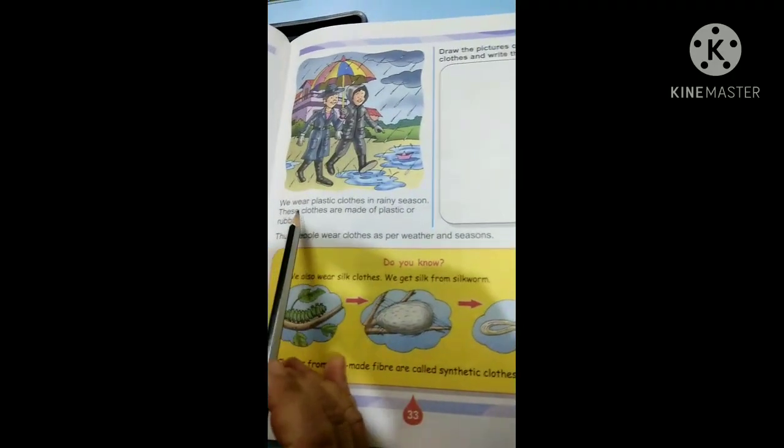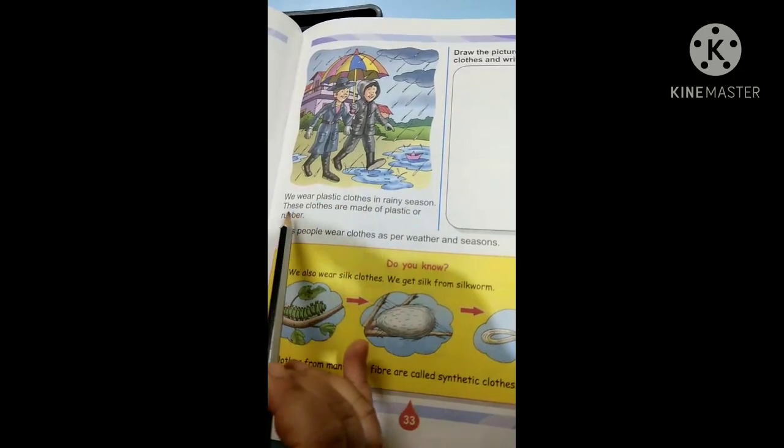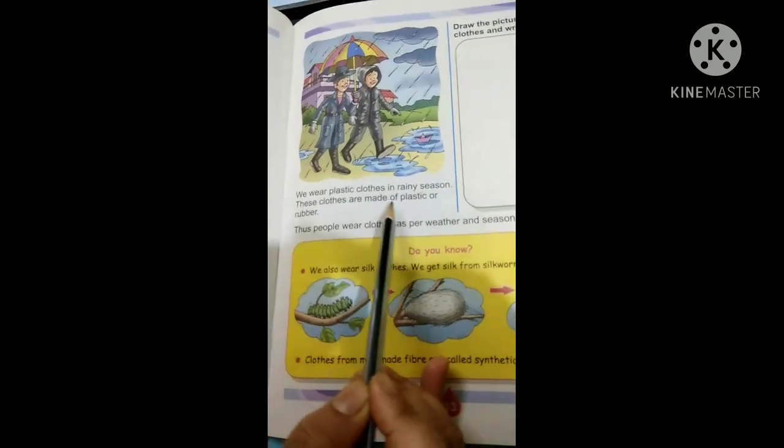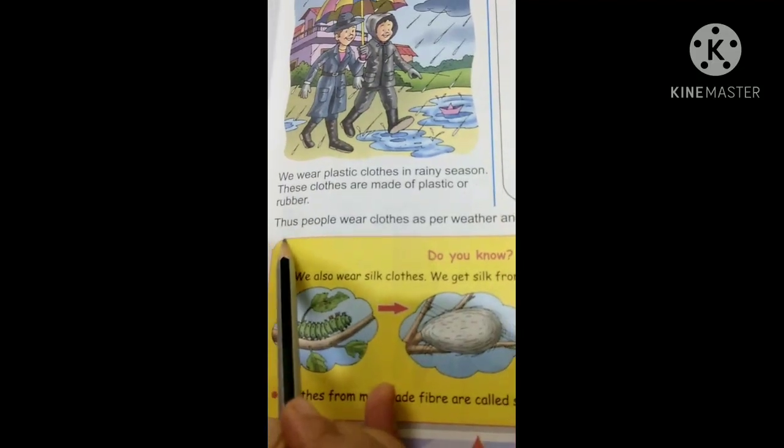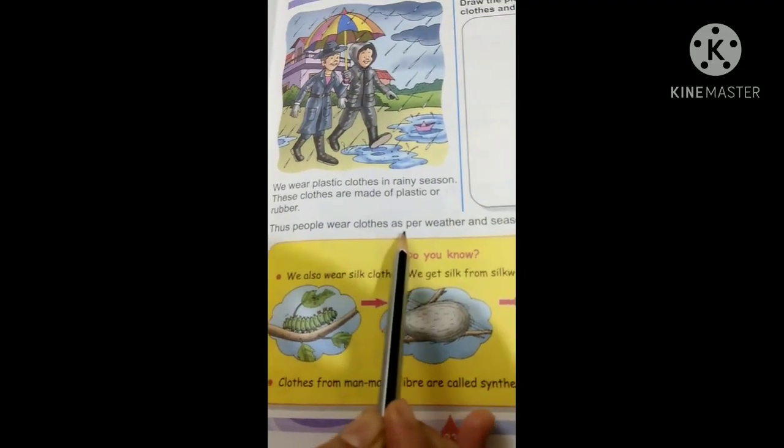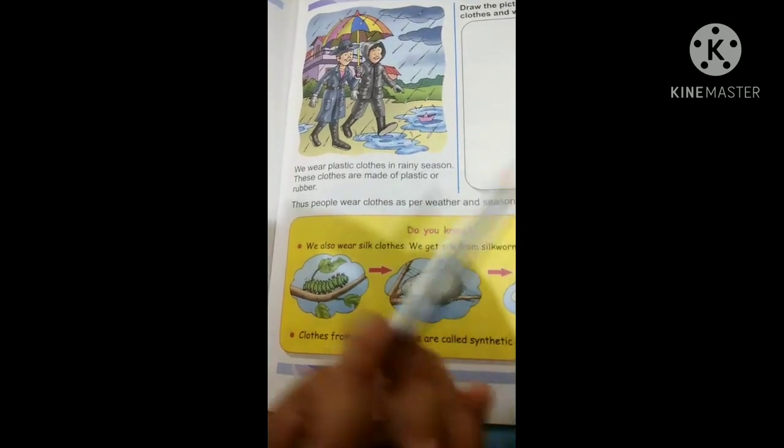So, let us read it. We wear plastic clothes in rainy season. These clothes are made of plastic or rubber. Thus, people wear clothes as per weather and seasons.